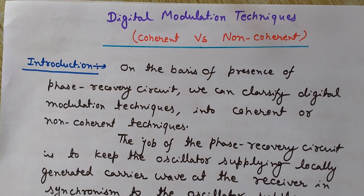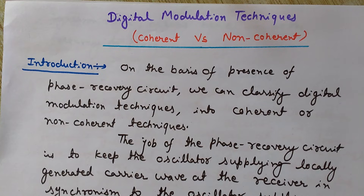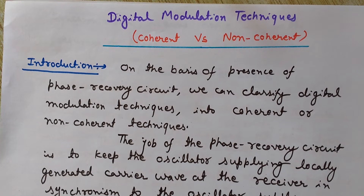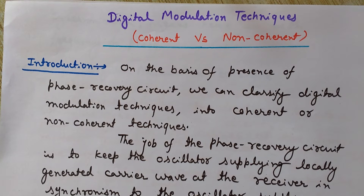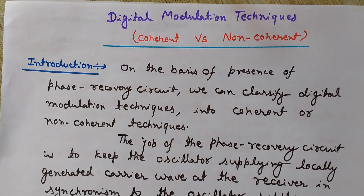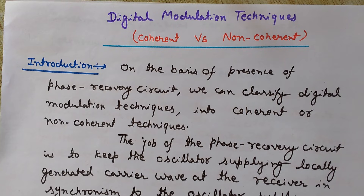Modulation of the carrier wave at the transmitting end is done by the modulating wave. We also use a carrier at the receiving end, known as the locally generated carrier wave. In coherent techniques, these two carrier waves must be in synchronism — they must be synchronized in both phase and frequency. This is the job of the phase recovery circuit.